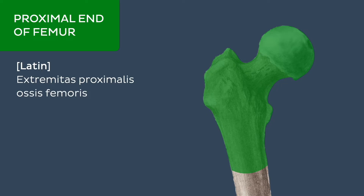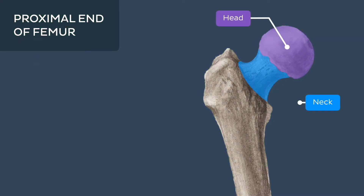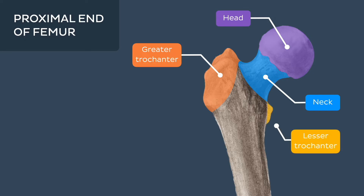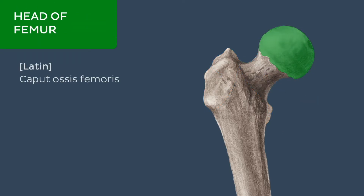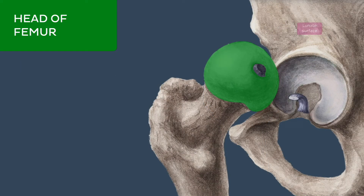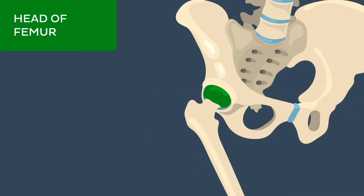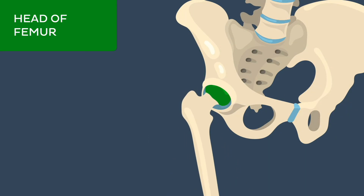The proximal end of the femur is composed of a head, neck, as well as greater and lesser trochanters. The head of the femur forms the most proximal aspect of the femur. It articulates with the lunate surface of the acetabulum of the pelvis, forming a ball and socket synovial joint called the acetabulo-femoral joint, or as it's more commonly known, the hip joint.